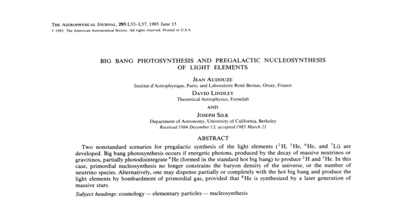It had been known since the 1930s that the conversion of hydrogen into helium by thermonuclear fusion reactions in stars was the main source of energy in the universe. So helium could have come from ordinary stars in the galaxy, and deuterium and lithium could have come from cosmic rays. Lithium can be produced by the collision of helium ions in cosmic rays with helium ions in the background plasma, or by collisions of protons with carbon or oxygen in the background medium.